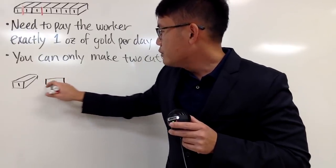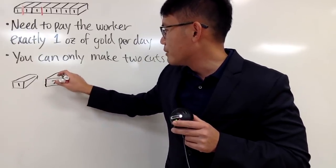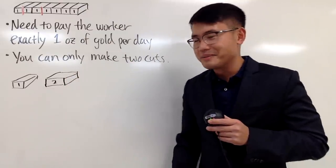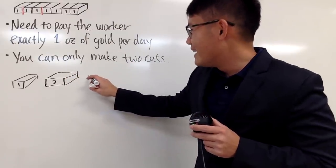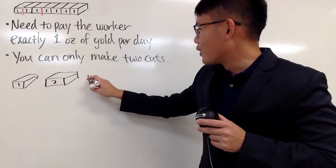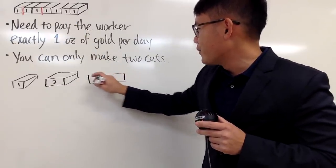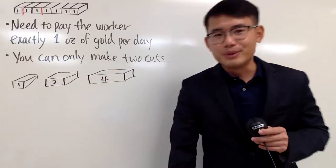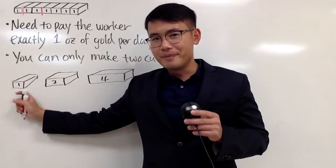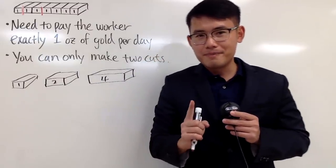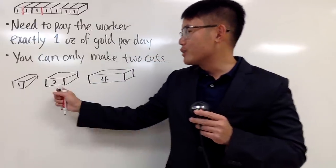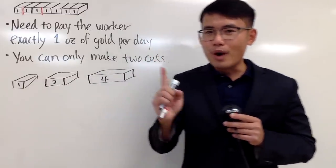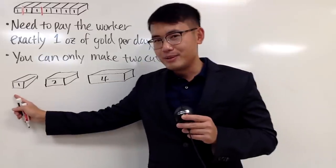And then, this right here, it's pretty much 2 oz. So let me just draw the gold right here. And then the last part right here is, of course, 4. So I'll just put it down like this. This is 4, and then we have this.